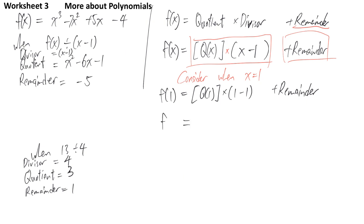That means f(1) is equal to Q(1), I don't know what is this, but we just simply multiply it by 0. Anything times 0, you may just simply ignore it. And then plus remainder.